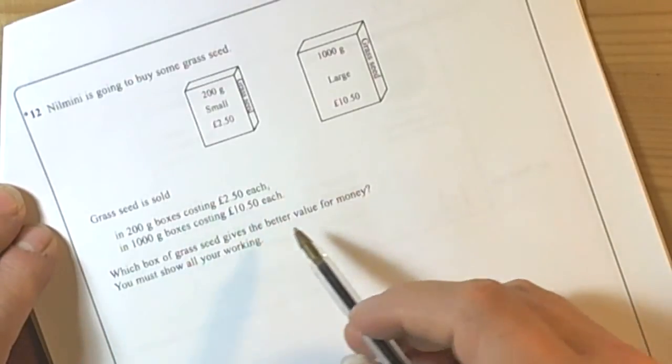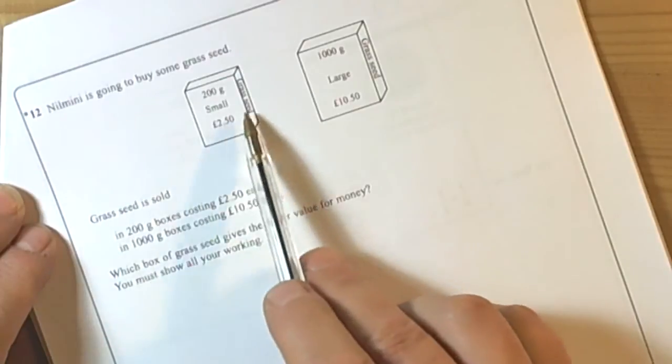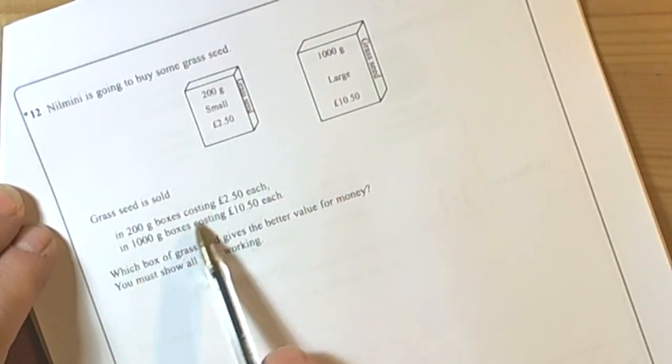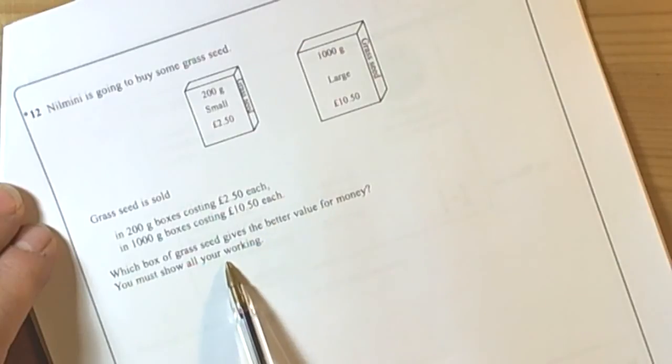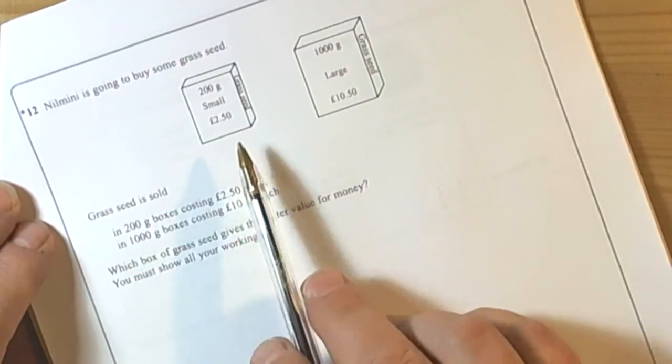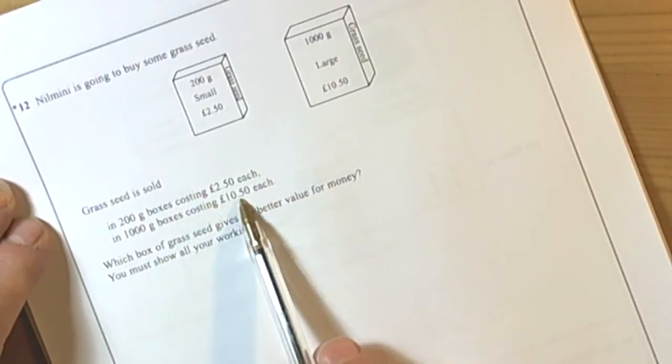Okay, start question. Got lots of work in this, so let's have a look at what the question's about. It's about some grass seed and it's sold in two different size boxes, and it's asking you which box gives you the better value for money. So what have we got? We've got 200g boxes costing that and 1000g boxes costing that.